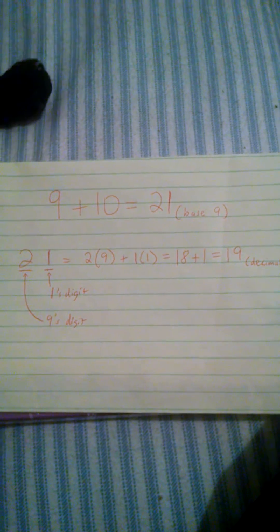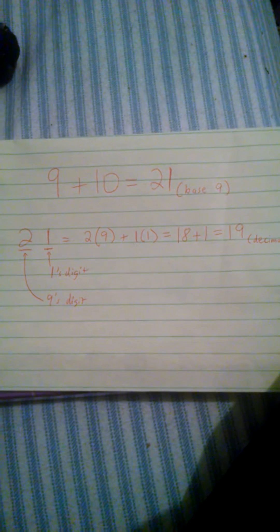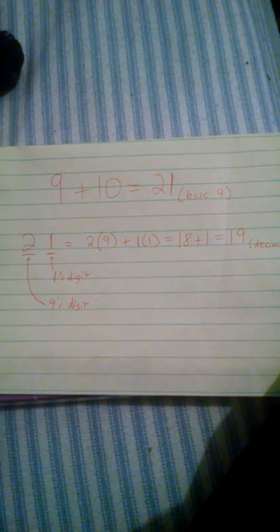This is in reference to the vine where the little boy is asked what 9 plus 10 is and he says 21. Well, I found a way for him to be right.